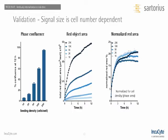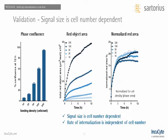The number of cells clearly affects the red area seen in the well, so we validated how signal size depends on cell number. With increasing numbers of HT1080s treated with CD71 labeled FabFluor, there is a large increase in red object area proportional to cell number. However, when normalizing the red object area for the phase area as a surrogate for cell density, the actual rate of antibody internalization is cell number independent, demonstrating that signal size is number-dependent but rate is independent.